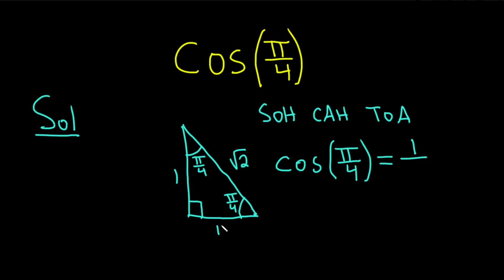So adjacent, which is 1, over hypotenuse, which is the square root of 2. The hypotenuse is the side that's across from the 90 degree angle. It's this one here.